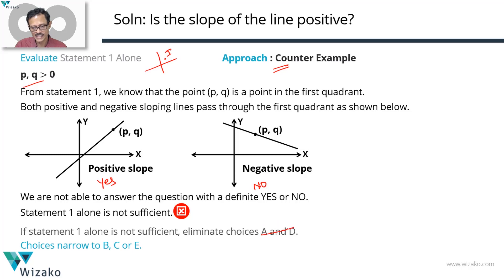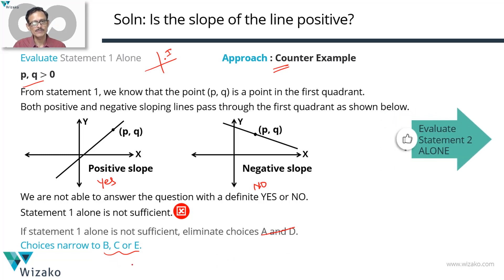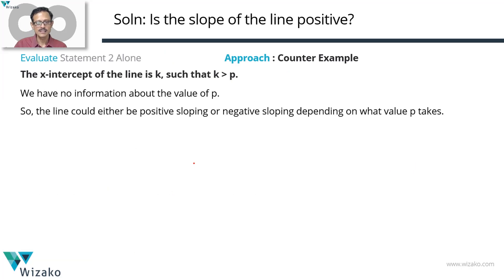Eliminate answer options A and D right away. What we are left with is B, C, or E. If statement two alone is sufficient, then we'll go with B. Otherwise, let's combine and check. Let's evaluate statement two alone.